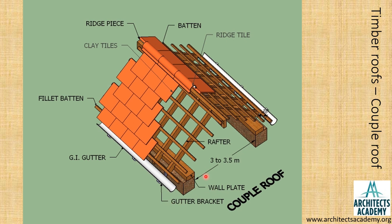Looking at the span of this roof, there is a maximum span limitation of 3.5 meters. The reason is that the rafters tend to slide down, putting a lateral load on the walls, which creates a tendency for the wall to overturn. If the span increases beyond 3.5 meters, the load would also increase and the walls would tend to topple.